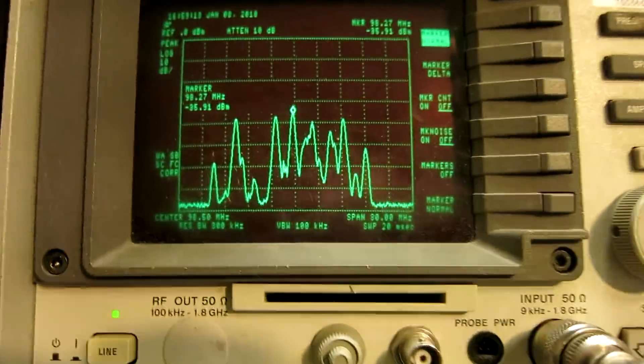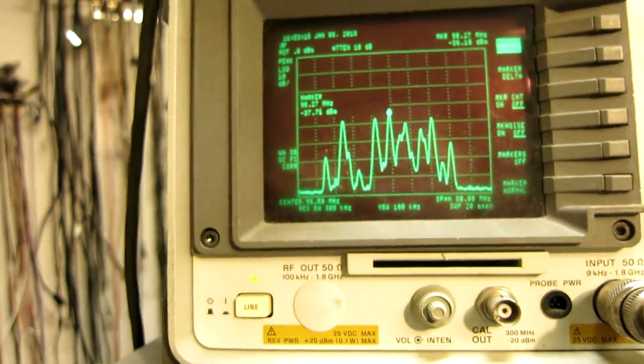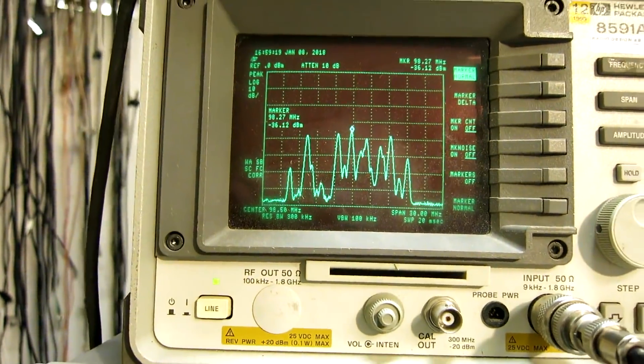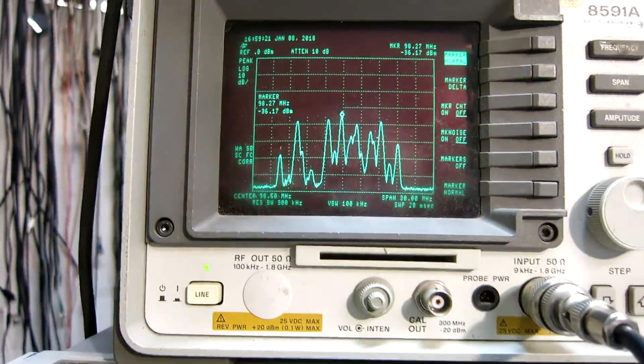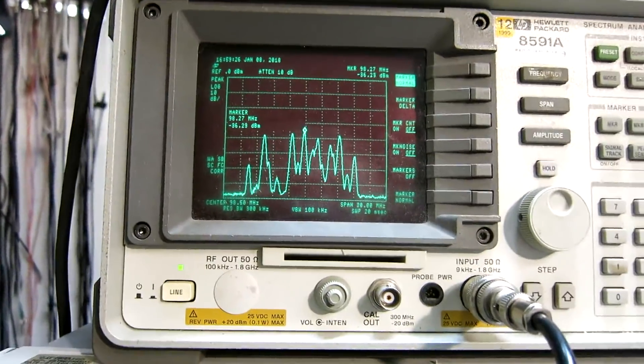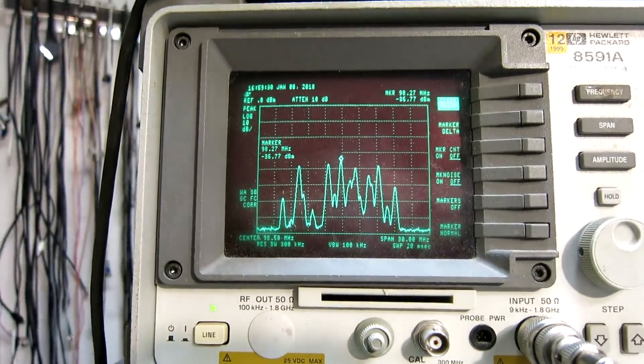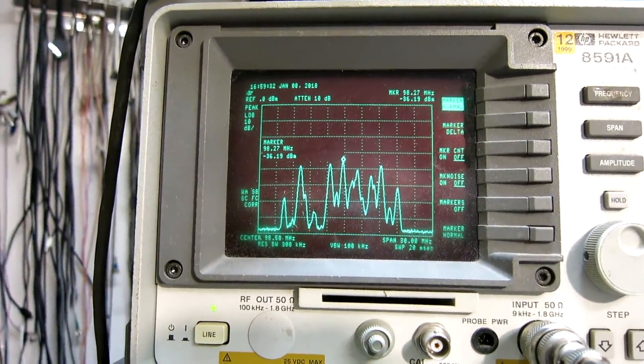The level on the FM band is now minus 36 dBm. It's not far from what I had from this blue wire. So the AirSpy HF Plus is fairly sensitive to the FM band.